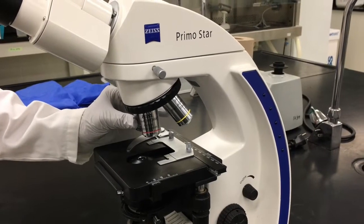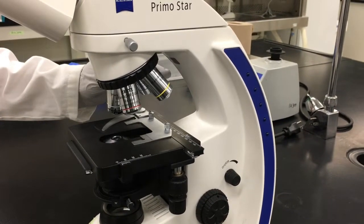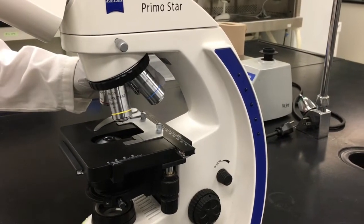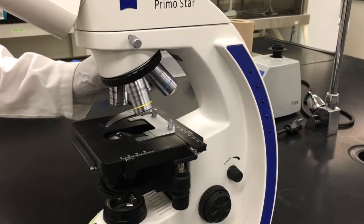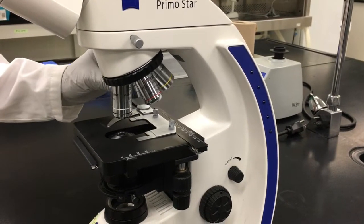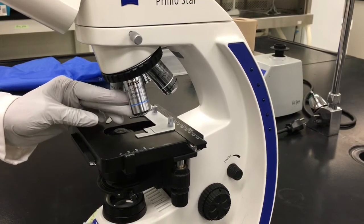In order to change the magnification, you simply rotate the objective lenses as shown here. The red corresponds to the 4x magnification, the yellow is the 10x, the blue is the 40x, and the white is the 100x magnification.